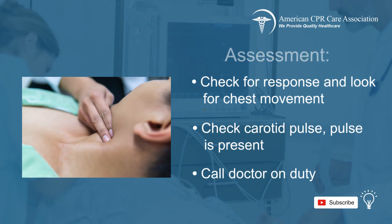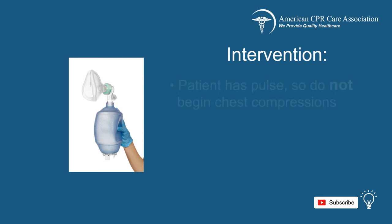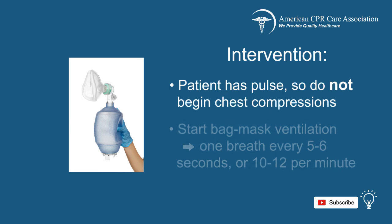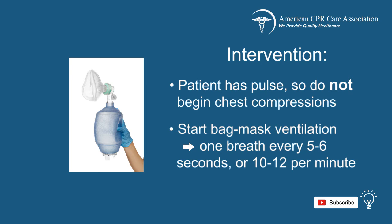Next, you may intervene. As you have determined that there is a pulse, do not start chest compressions. Now you can start bag mask ventilations at a rate of one breath every 5 to 6 seconds, or 10 to 12 breaths per minute.